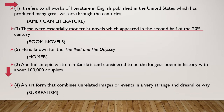Now let's go for the words down. Your clue for number 2 is: an Indian epic written in Sanskrit, considered to be the longest poem in history with about 100,000 couplets. The answer is Mahabharata. For number 4 down: an art form that combines unrelated images or events in a very strange and dreamlike way. The answer is Surrealism.